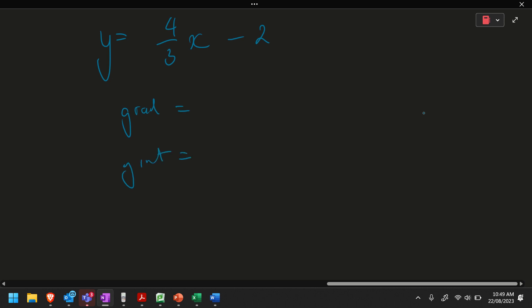The gradient is always next to x. Think of that, it's always paired with the x. So in this case, the gradient is 4 over 3. Now, because it's a fraction, I don't need to put it over 1. Only if it's a whole number do you put it over 1. So if the answer was 4x, then you'd make the gradient 4 over 1. But in this case, it's 4 over 3, so we'll leave it as that. Easy. The y-intercept is the number that's on its own. In this case, it's negative 2.